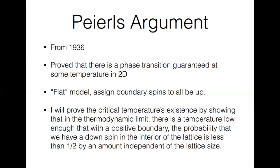For some spin deep inside the lattice, some sigma naught, we would expect the probability that it is a downspin to be one half if there is no magnetic field. However, if the temperature is low enough and we therefore have spontaneous magnetization, the probability that sigma naught is down becomes less than one half by an amount independent of the lattice size. And that is what we shall now prove.